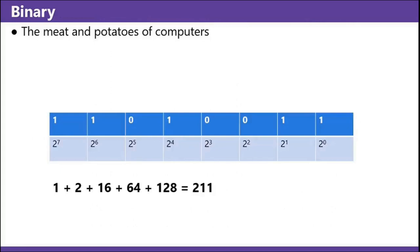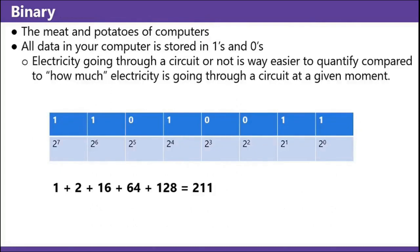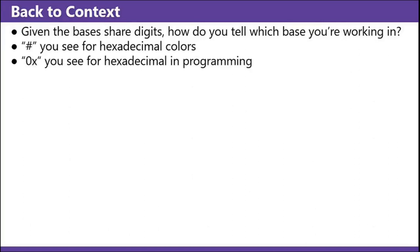Binary — the meat and potatoes of computers. All of the data in your computer is stored in ones and zeros. Electricity going through a circuit or not is way easier to quantify compared to how much electricity is going through a circuit at a given moment. For example, 11010011 in binary — you do the math to add it all up — that's 211. Back to context: given that bases share digits, how do you tell which base you're working in? Hashtag you'll see for hexadecimal colors; 0x you'll see for hexadecimal in programming.